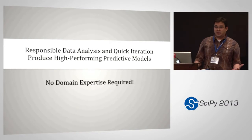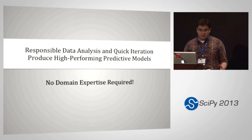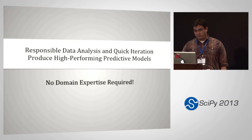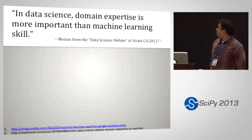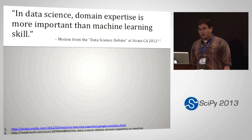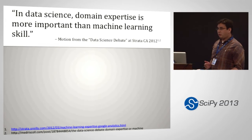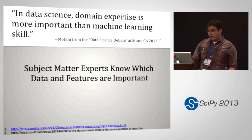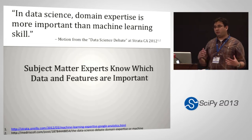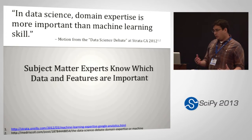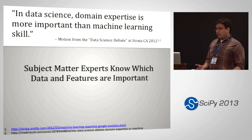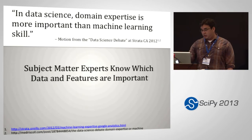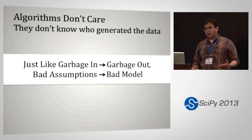The other takeaway is that you don't need domain expertise. I'm a generalist who works on a variety of problems — I'm not a machine learning expert, not a healthcare expert, and I definitely don't have any experience with whales. There was a data science debate at Strata last year where the motion was 'in data science, domain expertise is more important than machine learning skill.' One takeaway was that subject matter expertise helps you know which data and features are important, frame the problem more easily, and build high-performing predictive models.